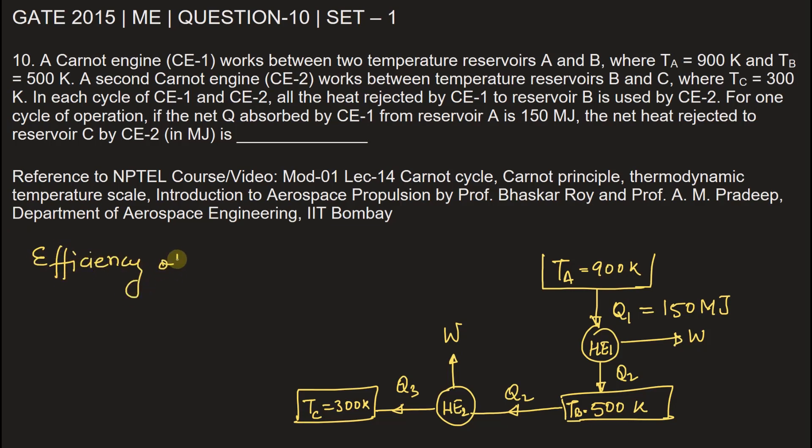Efficiency of heat engine 1: eta 1 will be equal to 1 minus 500 by 900. 500 is the temperature of reservoir B and 900 is the temperature of reservoir A, so this will be equal to 0.444 or in percentage 44.4 percent.